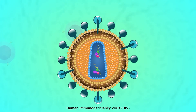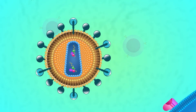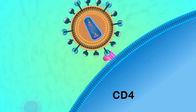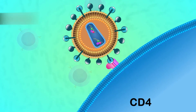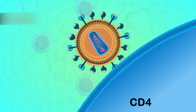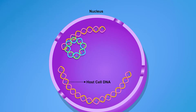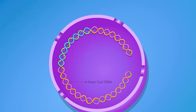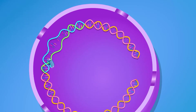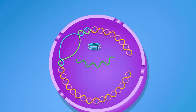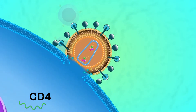HIV is an RNA virus that attacks our body's immune system — our body's defense system — and weakens it by destroying some important components called CD4 cells. CD4 cells protect us by fighting against infections and some types of cancers.